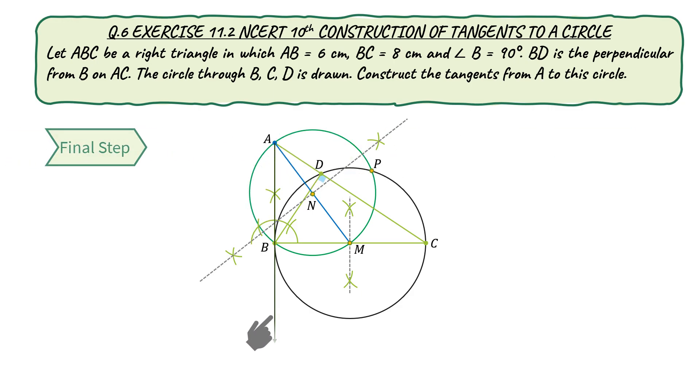Finally, by drawing lines AB and AP, we get tangents from A to the black colored circle. So, this is how we construct the tangents as asked in the question.